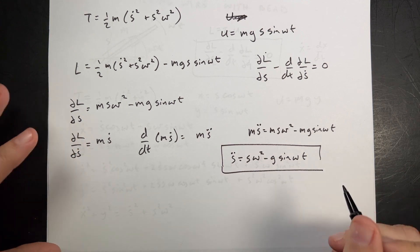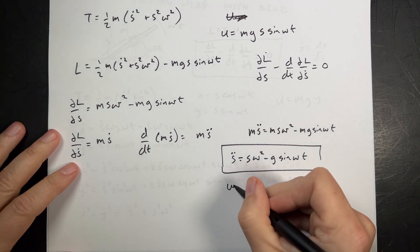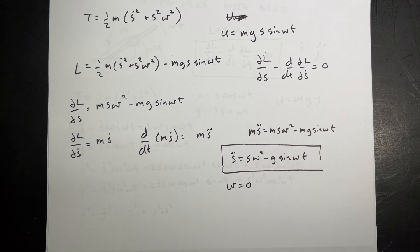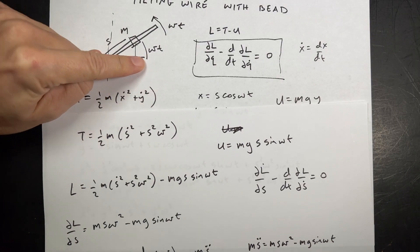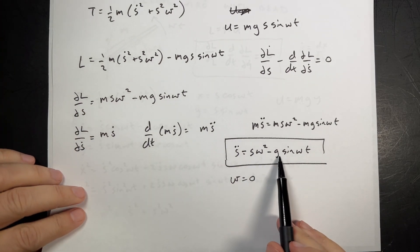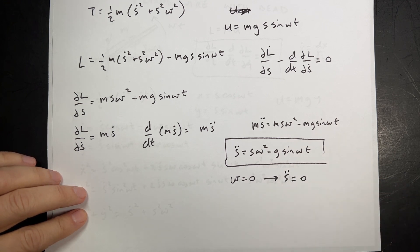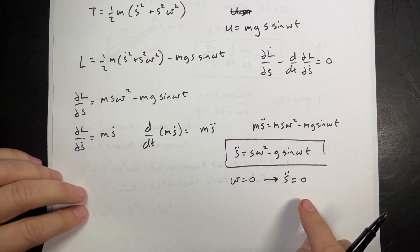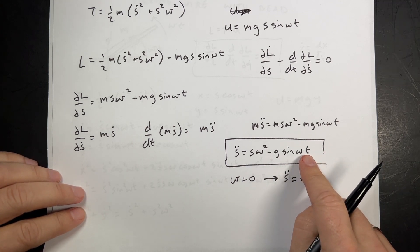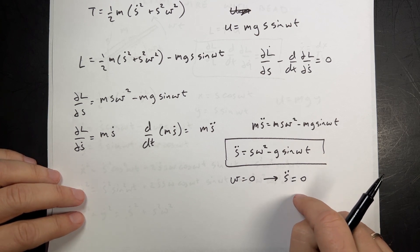Now let's do this part. The partial of L with respect to s dot. And then we'll take the time derivative. Now I'm looking for s dot terms. Right there. That's the only one. So I again use the power rule and I get m s dot. Now I can take the time derivative of this. So I can say the time derivative d dt of m s dot is going to be m s double dot. Because m is constant. So it doesn't really matter. So this minus this has to be equal to zero or this is equal to this. So now I get m s double dot equals m s omega squared minus mg sine omega t. I'm going to go ahead and cancel the m from both sides and I get my differential equation. S double dot equals s omega squared minus g sine omega t. Now that was the part I wanted for the test.